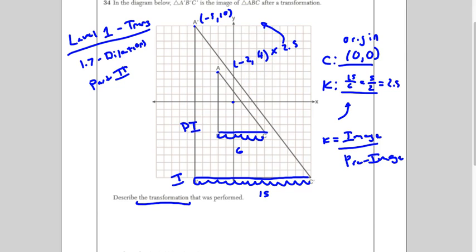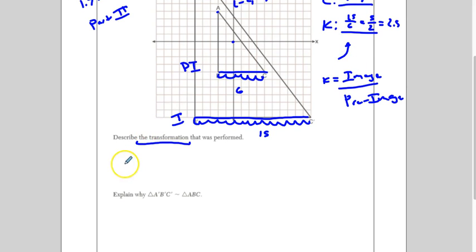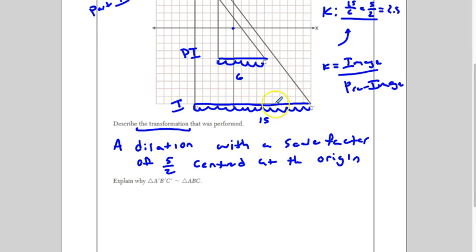Another cool way to do it that I've seen done is that you could actually just draw a line connecting. Actually, never mind. We'll just do it that way. All right? So, now, to describe our transformation, we've got our center, we've got our scale factor. This is a dilation with a scale factor of 5 halves centered at the origin. All right? All right? And now, we have to explain why they are similar.